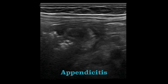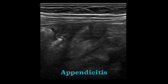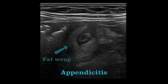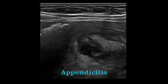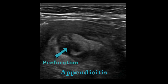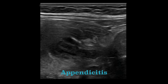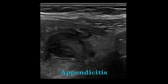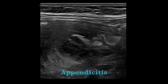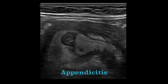Here's another example of appendicitis on ultrasound. Again, we have a dilated, thick-walled appendix. This time, there is a discernible fat wrap of inflammatory tissue. As we continue scanning, we see a defect in the wall of the appendix. There is also some surrounding peri-appendiceal fluid. These findings are suggestive of a perforated appendix.